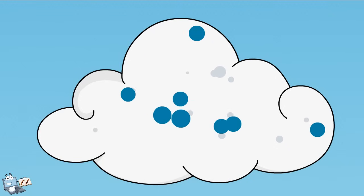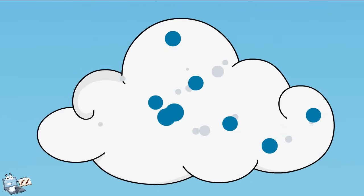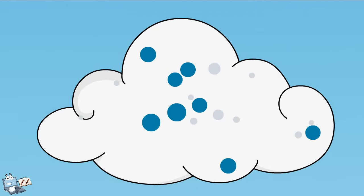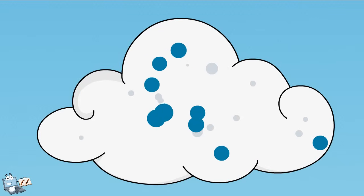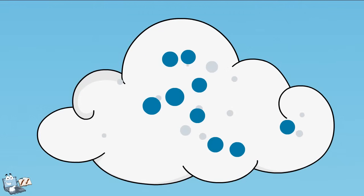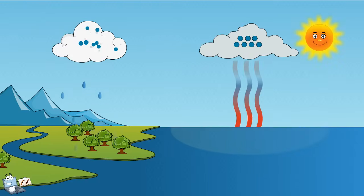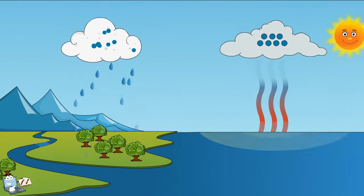Every single raindrop that reaches the ground is made of one million of the original tiny water droplets. Raindrops fall on the ground surface, and when the sun can shine on them, the whole process happens again.